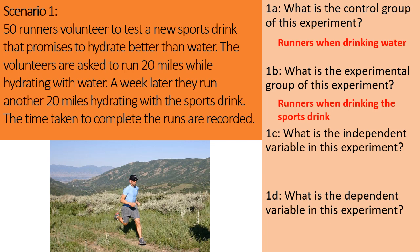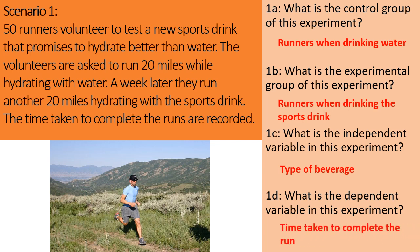Letter C, the independent variable. The independent variable is what's different between the two test groups. One group is drinking water and one is drinking sports drink, so the difference is the type of beverage. And then part D, the dependent variable — that's what data is being collected. In this case, the data being collected is the time taken to complete the runs.